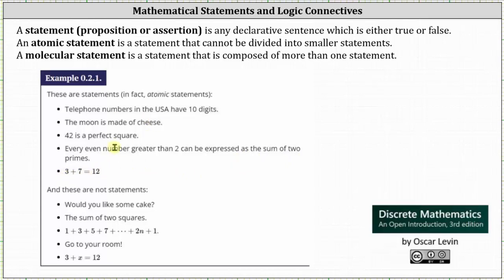All of these are atomic statements because they are declarative sentences which are either true or false and cannot be divided into smaller statements. And here we have some examples that are not statements. Again, these are not declarative sentences which are either true or false. Would you like some cake? The sum of two squares. 1 plus 3 plus 5 plus 7 etc. plus 2n plus 1. Go to your room. 3 plus x equals 12.